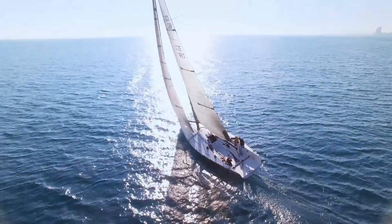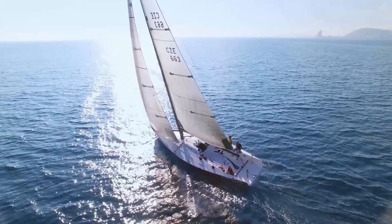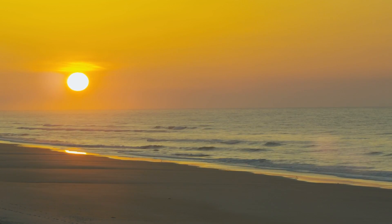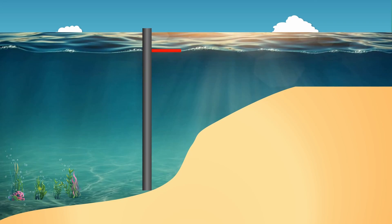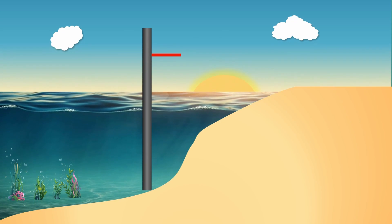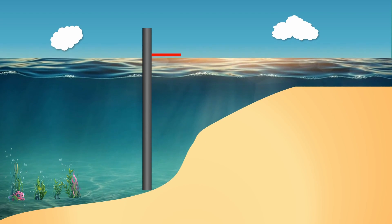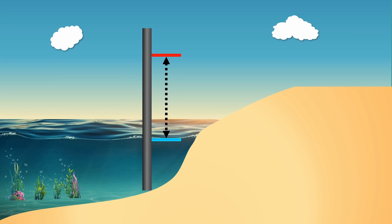You might have noticed that not all coastlines experience the same tidal range. The reason is that the coastline's physical features affect the height of the tides. Tidal range means the height difference between the high tide and the low tide. Some coastlines experience negligible tides while some others experience a very high tidal range. We cannot generate electricity with a very low tidal range.